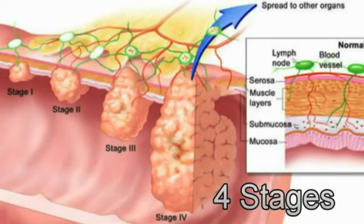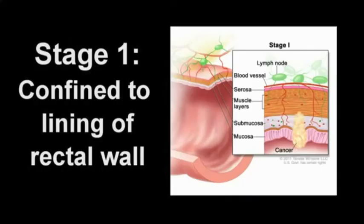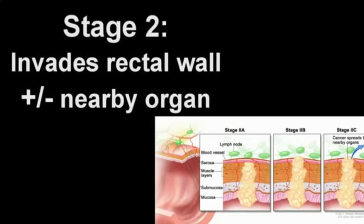There are four stages of rectal cancer. Rectal cancer is defined as stage 1 if the cancer tissue is confined to the lining of the rectum. In stage 2 cancer, the cancer tissue has invaded the layers of the rectal wall and may have invaded nearby organs such as the bladder.